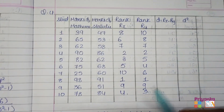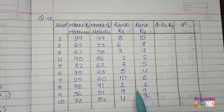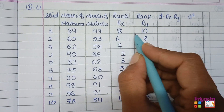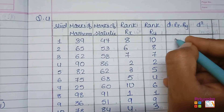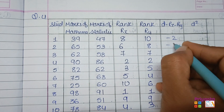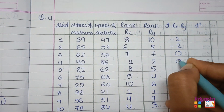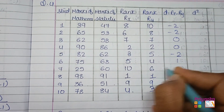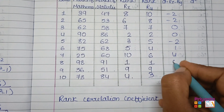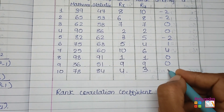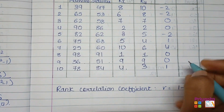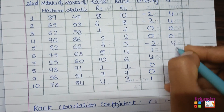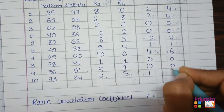After assigning ranks to both columns, find D by subtracting Ry from Rx: 8 minus 10 gives minus 2; 6 minus 8 gives minus 2; 7 minus 7 is 0; 2 minus 2 is 0; 3 minus 5 gives minus 2; 5 minus 4 is 1; 10 minus 6 is 4; 1 minus 1 is 0; 9 minus 9 is 0; 4 minus 3 is 1. Then compute D²: 4, 4, 0, 0, 4, 1, 16, 0, 0, 1.